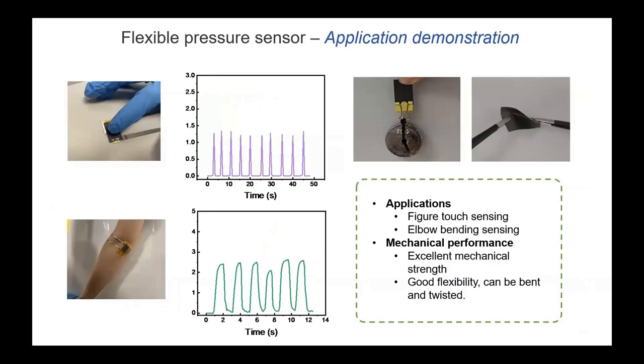We have tested the potential applications for our device in wearable applications. First, we used a constant finger touch on the top of our device. We can see that the pressure generated during touching can be detected every time. We also placed our device on the joint of the human elbow, and every time of bending our device could respond to it.